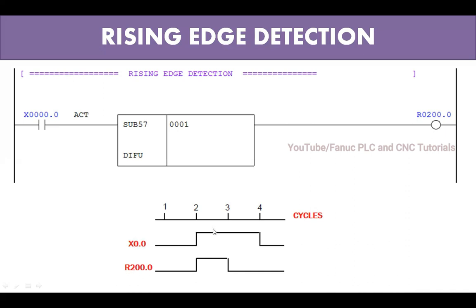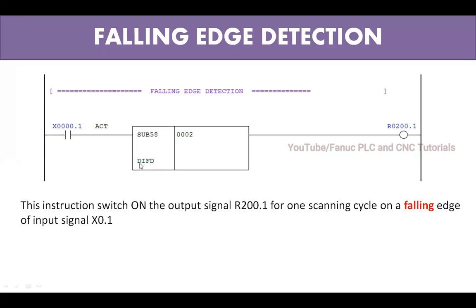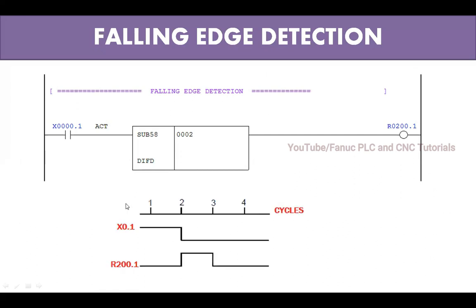Now for falling edge detection, this is DIFD. Whenever the input signal becomes 1 to 0, the output R200.1 is on for one scanning cycle. When the input becomes 1 to 0 and remains continuously 0 in later cycles, R200.1 is on for only one scanning cycle and after that it is off.